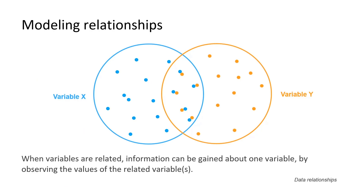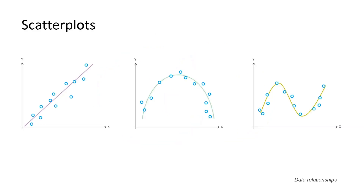We're going to be measuring relationships. So before going any further, let's talk about what it means when we say two variables are related. In the simplest sense, two variables are related if we can estimate the values of one variable based on what we know about the values of another. For example, we can probably get a good understanding of diabetes risk by examining data about obesity — the two variables are related. Conversely, if no information can be gained about one variable from another, we say they're unrelated or independent. Data relationships can take many different forms, including linear, curvilinear, and sinusoidal. We can look for these relationships by creating scatter plot charts.